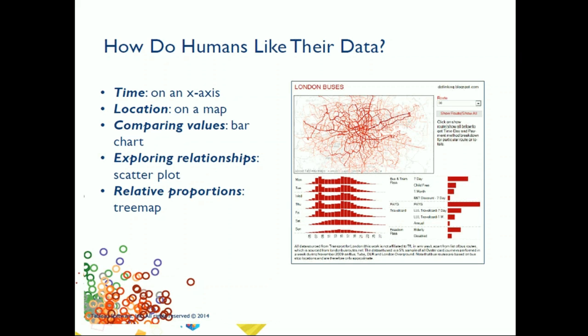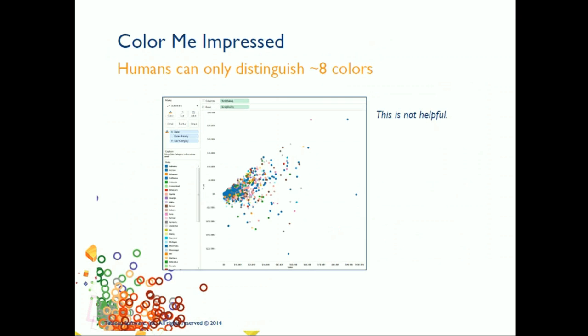Too many things — too many colors, too many shapes — are not good for a dashboard. They say a human can distinguish only eight colors. When you're working with Tableau and making changes, you add colors and make charts, and there's a tendency to get carried away, keeping on adding too many borders, too many fonts, and changing fonts.